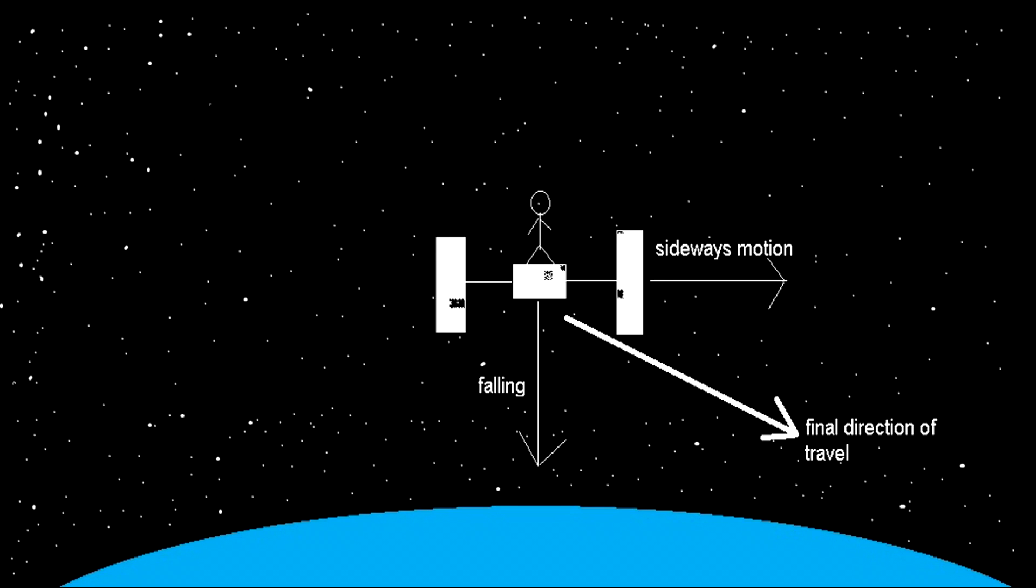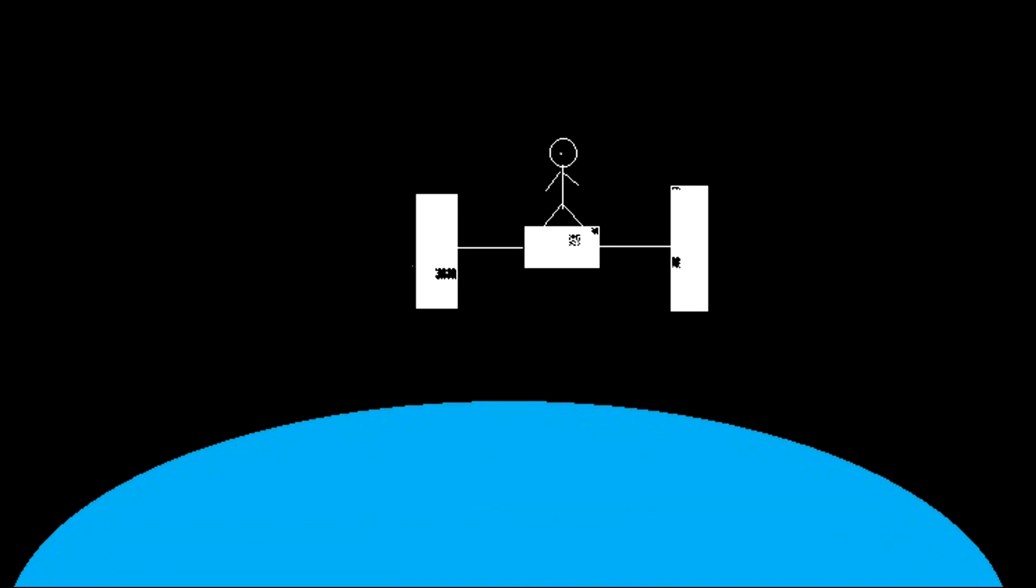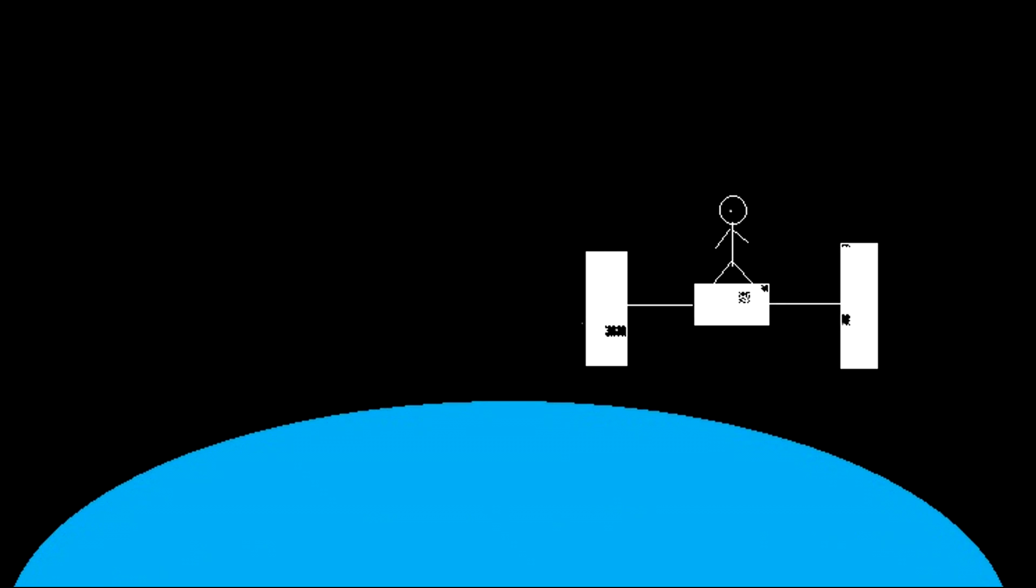Another way to think about this is that astronauts are falling towards Earth and if they get a tiny bit closer to Earth, the Earth curves away from them because Earth is circular. So their distance is maintained.